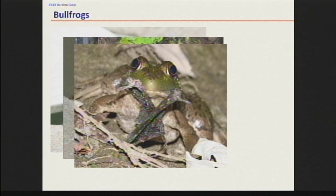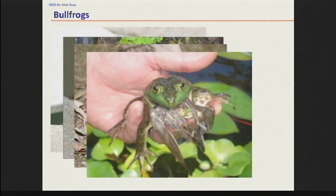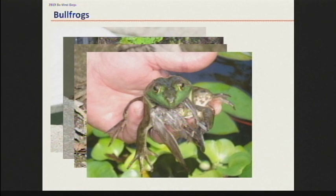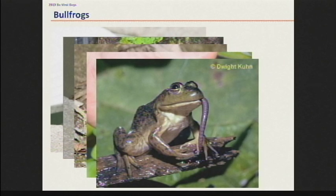They can even get bats — this is a picture of a bullfrog eating a bat. I've seen many stomach contents with bird remains and with turtle hatchlings. They will eat anything they possibly can. Typically though, they're going to eat the macroinvertebrates, the bugs. But large-bodied prey are definitely one of the issues with these bullfrogs.